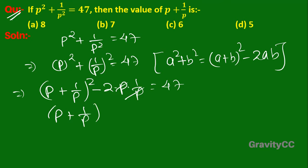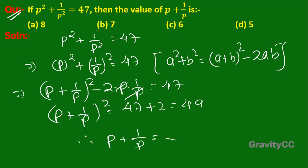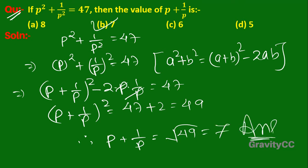So p plus 1 upon p whole square equals 47 plus 2, which is 49. Therefore p plus 1 upon p equals root of 49, which is 7. So option B is the correct answer.